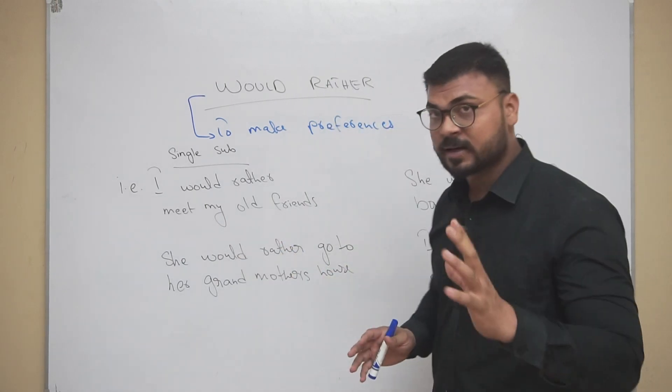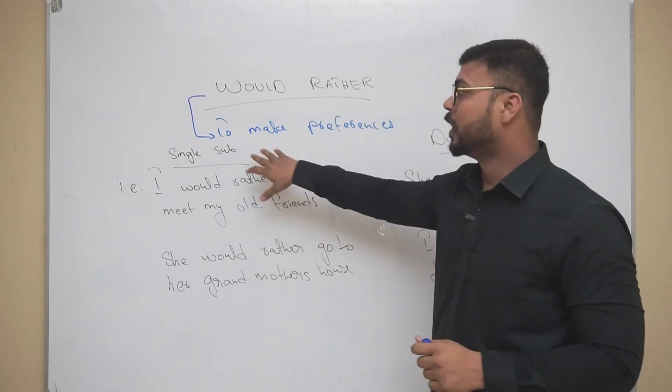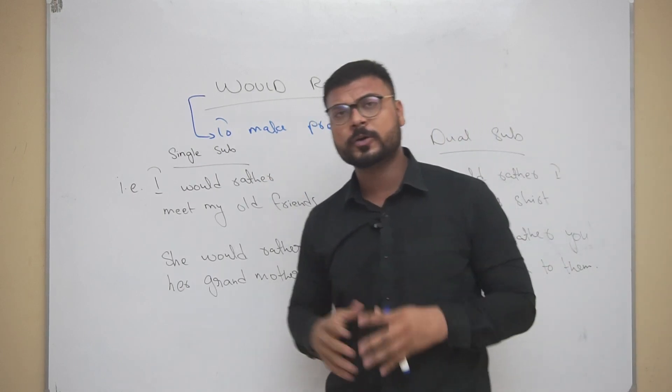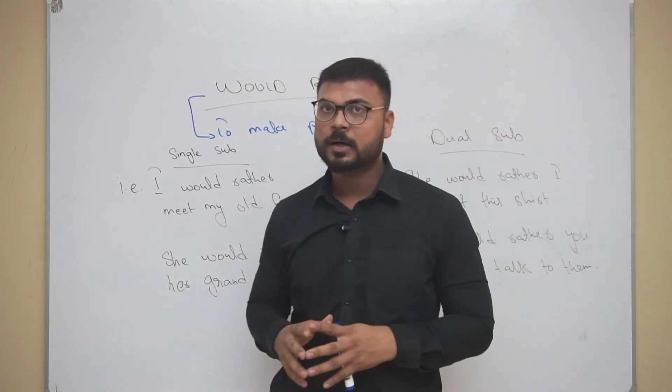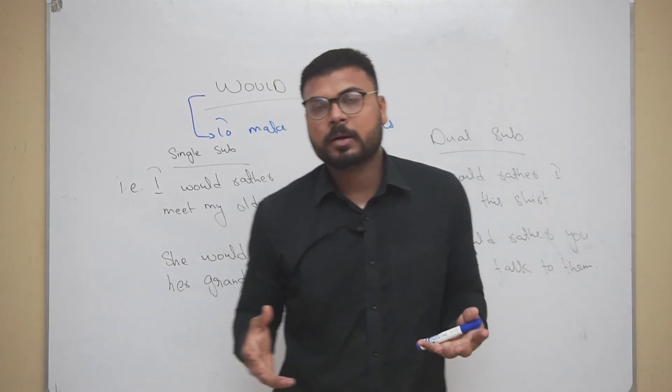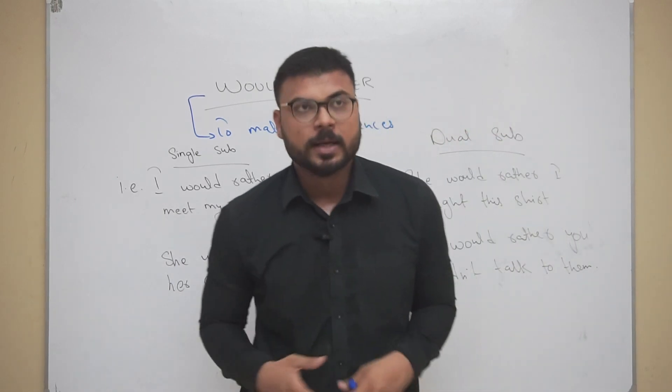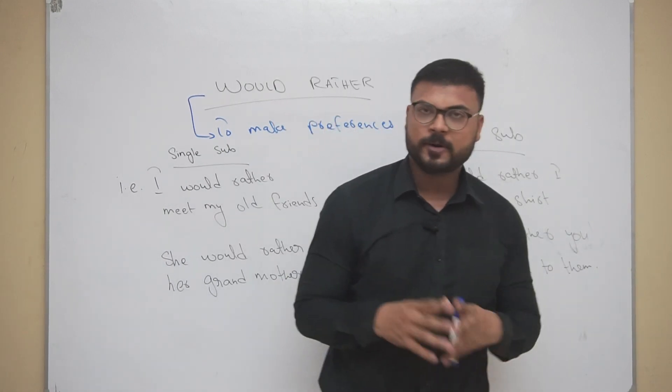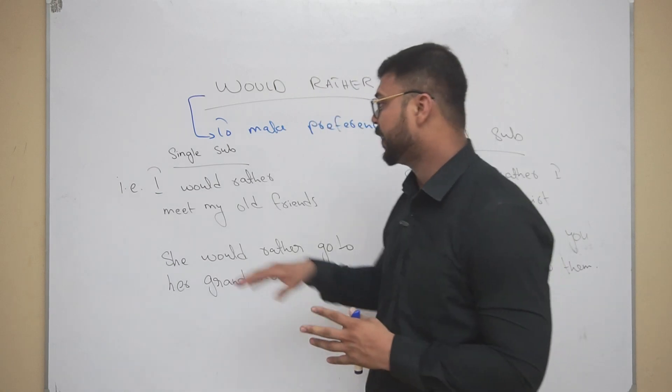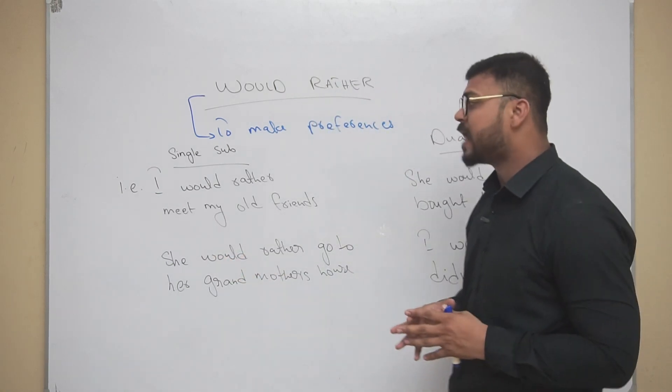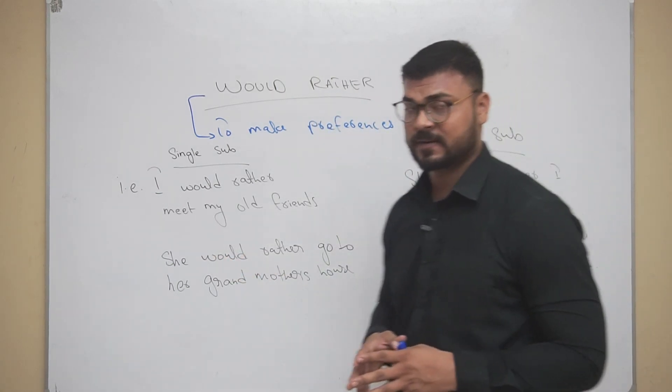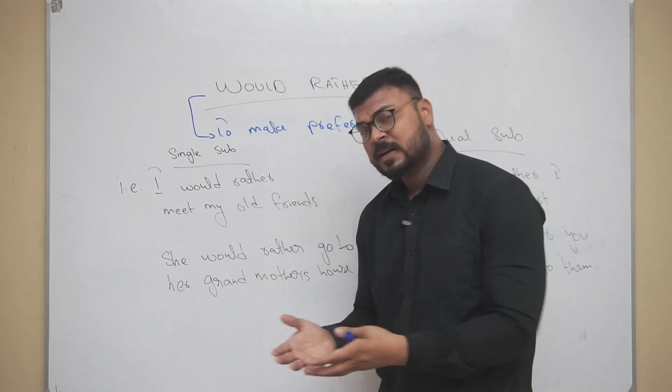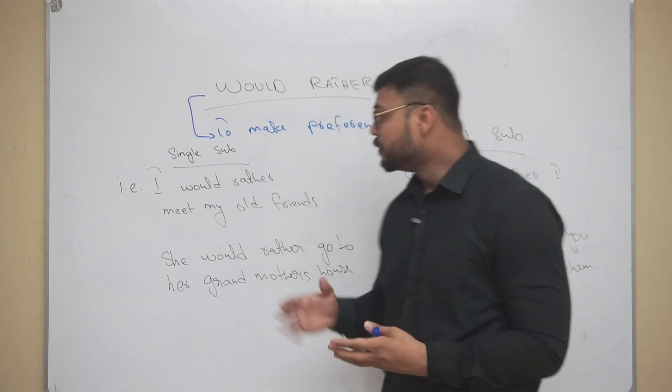Please listen so carefully. With single subject it's really easy to make preference. In simple English we usually say I prefer to eat this, I prefer to do this. But this time you're going to learn it this way: I would rather meet my old friends, which means that rather than doing anything else, I would prefer to meet my old friends.